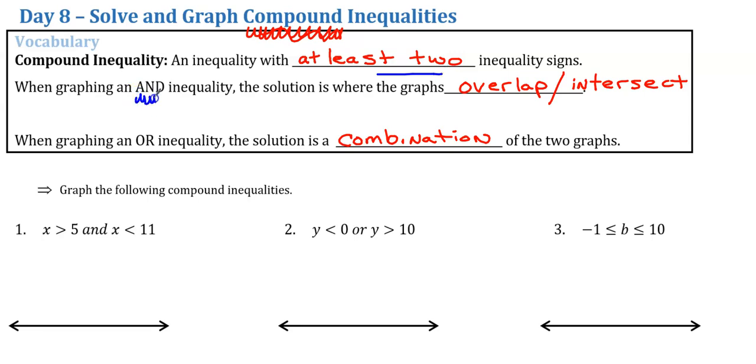We have two different types of compound inequalities: and versus or. And they're different. The words and and or mean different things. If my wife wants to go to dinner and a movie, I've got to do both of those two things. If she wants to go to dinner or a movie, I can do either one. I don't have to make both of them come true. No different with our math.